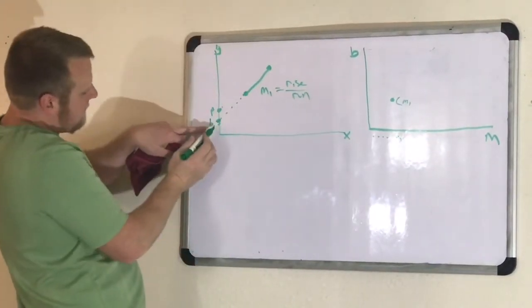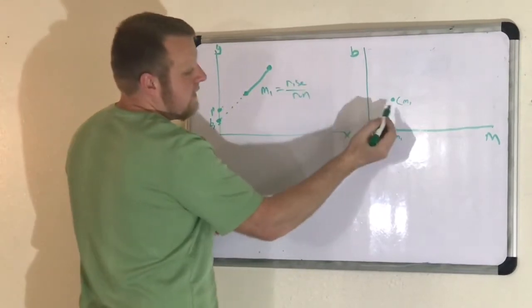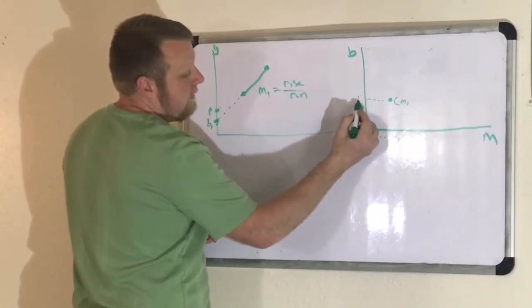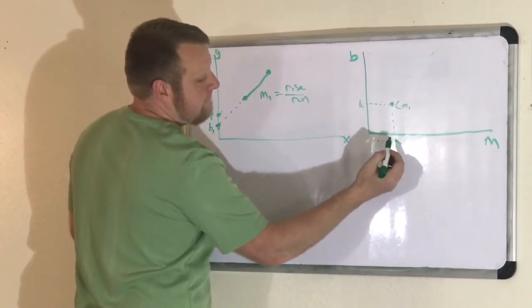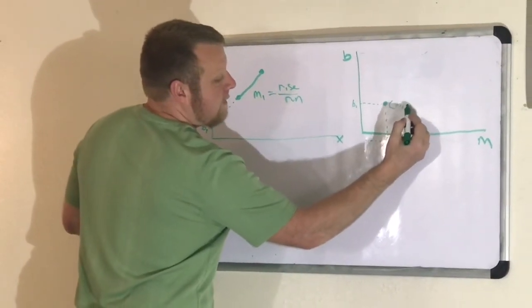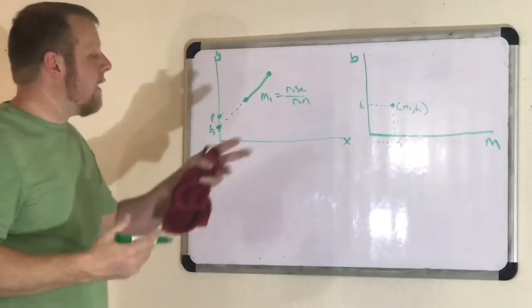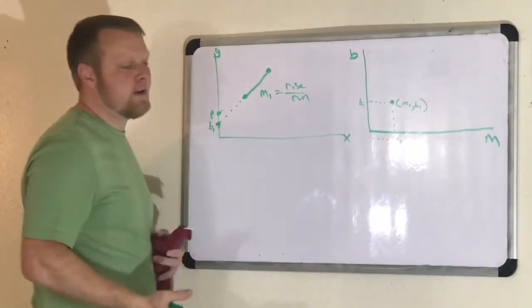And then where does it hit the b axis? It hits it at b1. So our b axis, if you go over here, is b1. So m1 comma b1 is our point. Now why do we want to do something like this to transform?